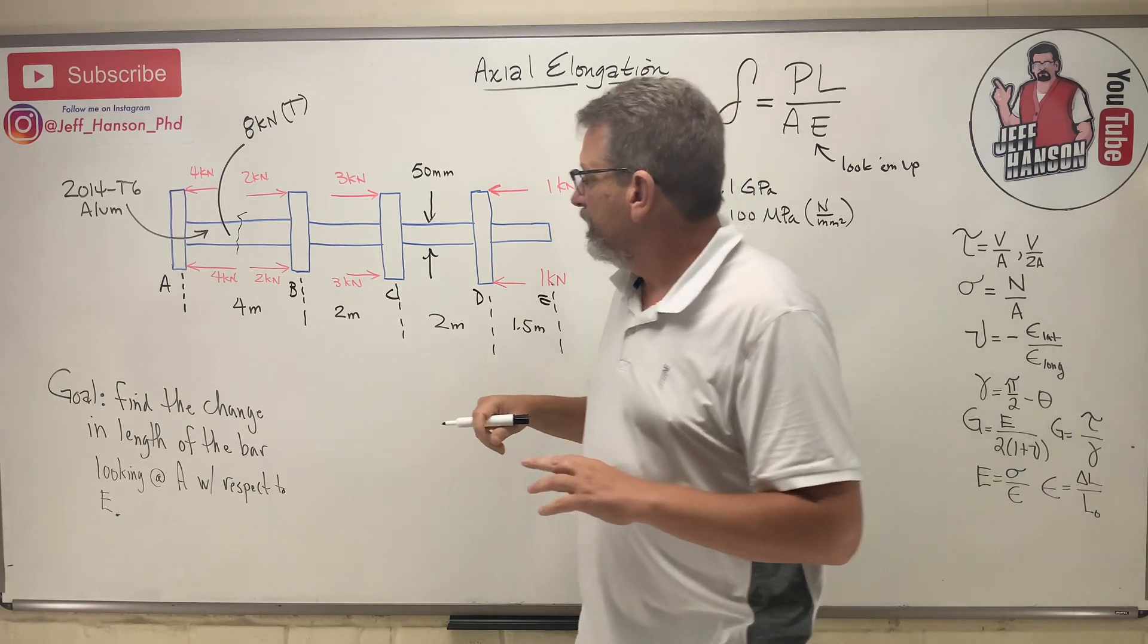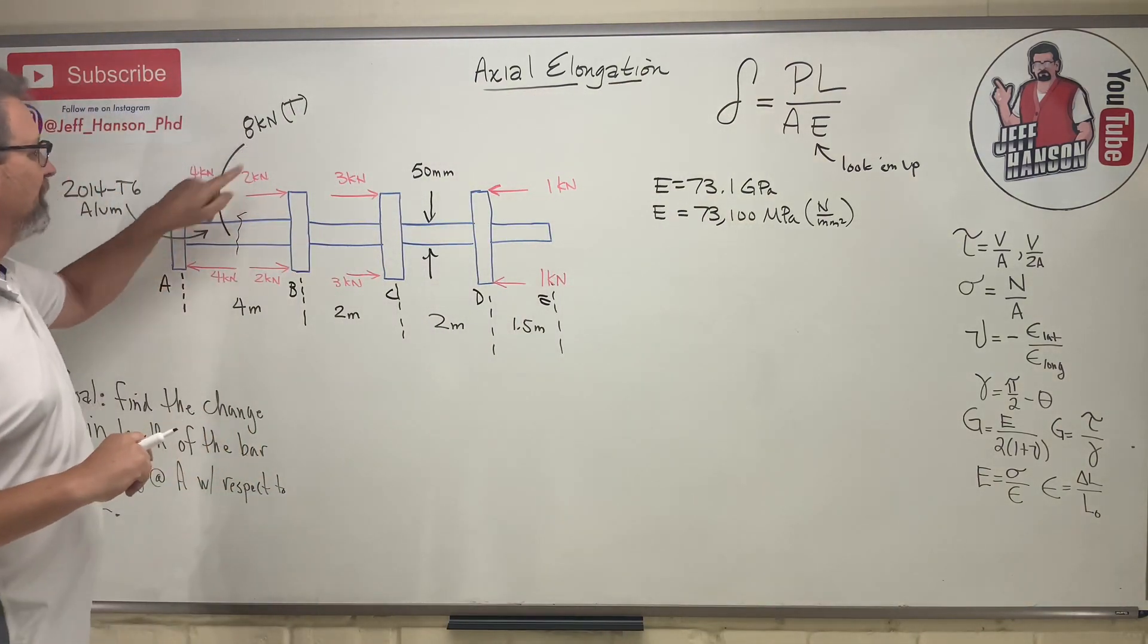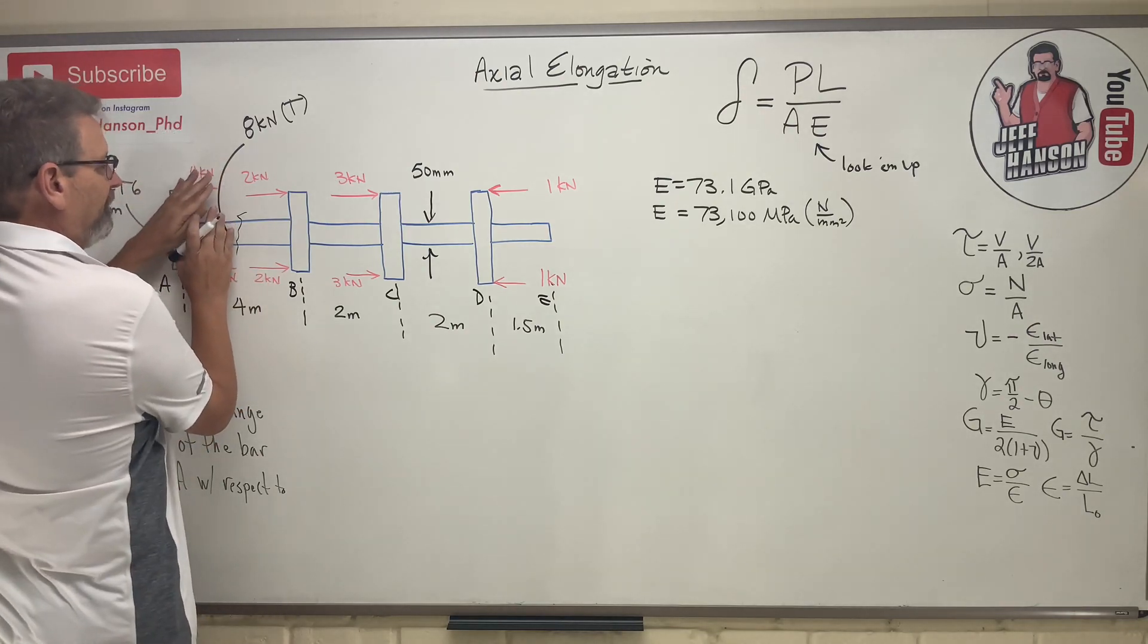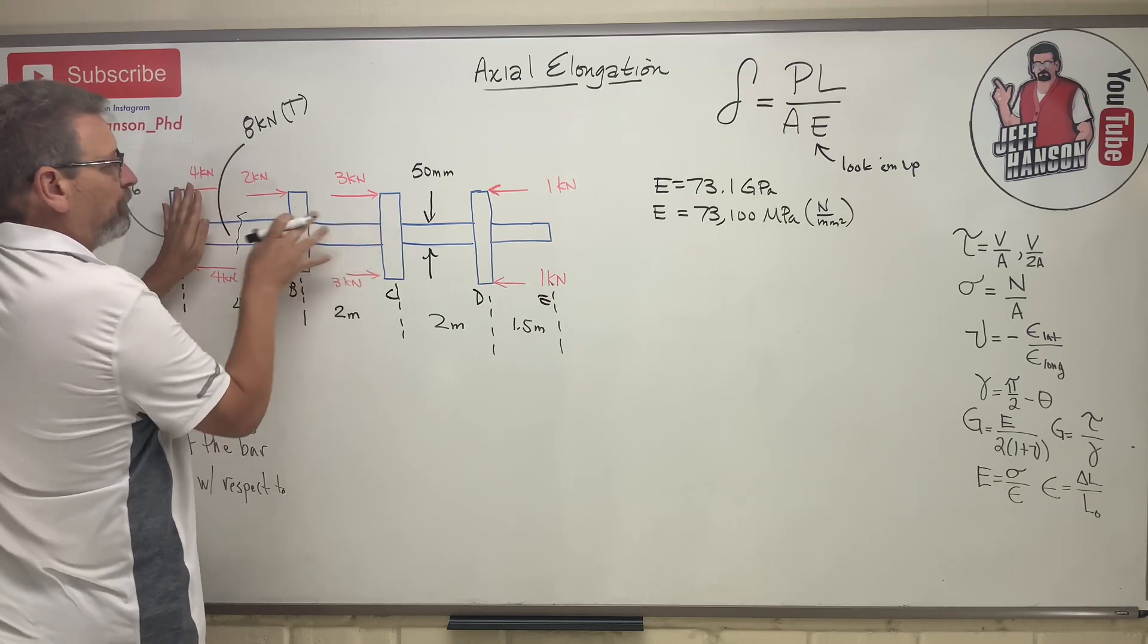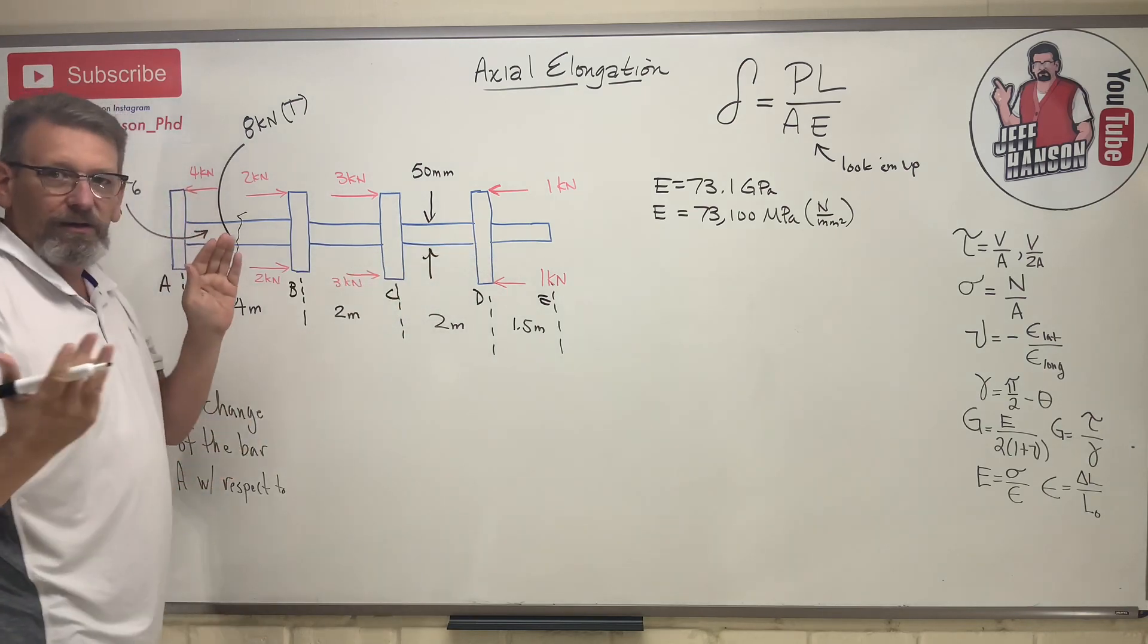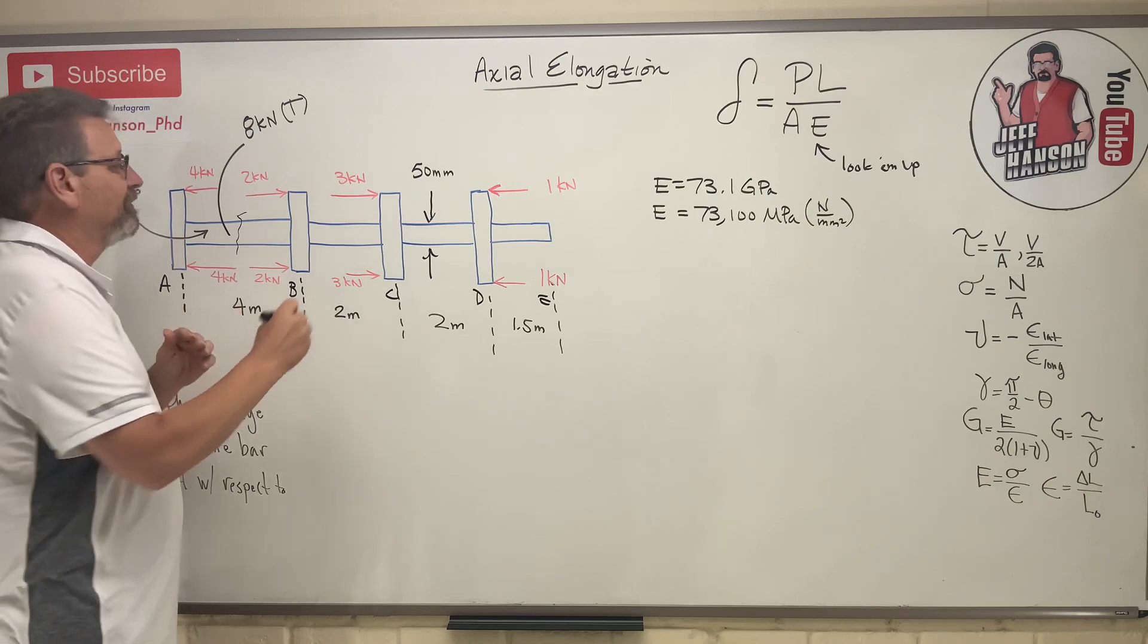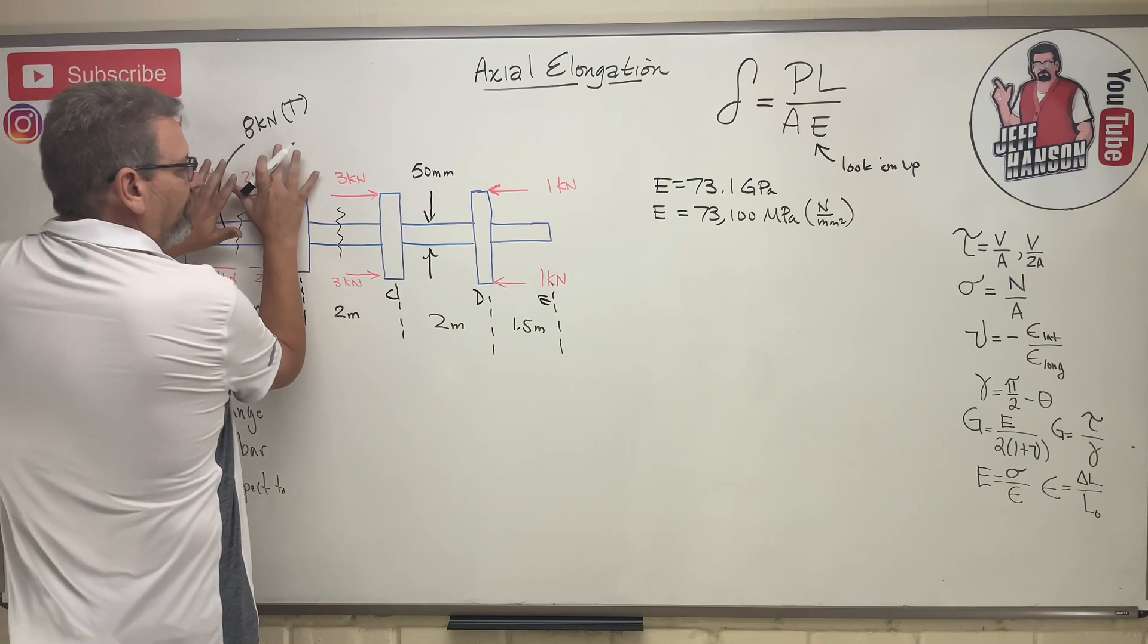What if you covered up this side - what do you have? I got four plus six more, that's ten, minus two - it's still eight kilonewtons in tension. So either side you look at, you're going to get the right answer. What about this section? Let's cover this all up.